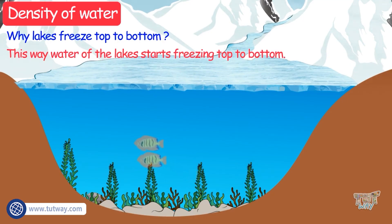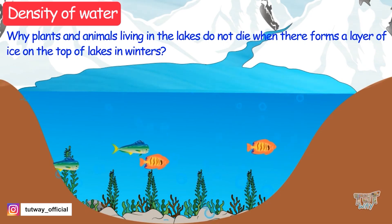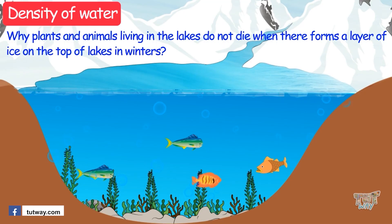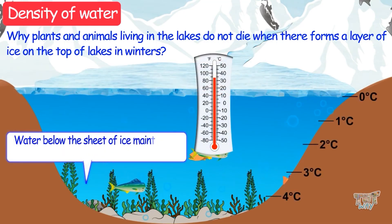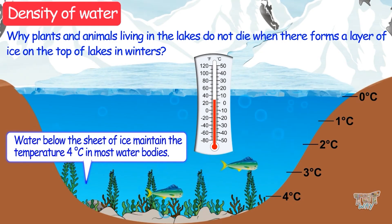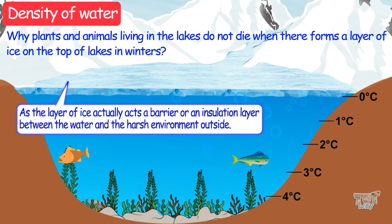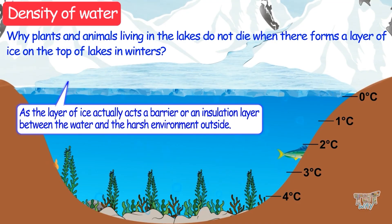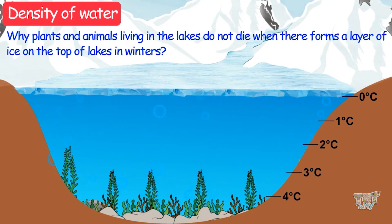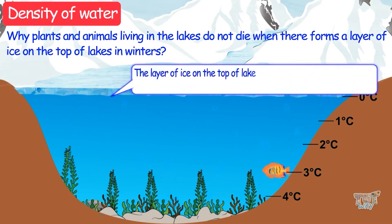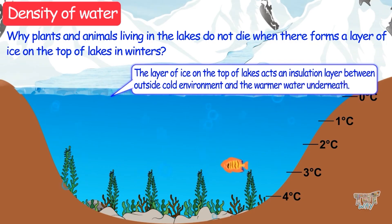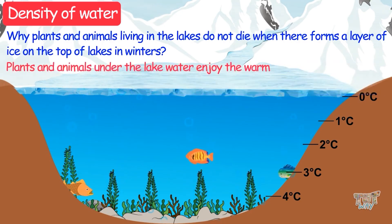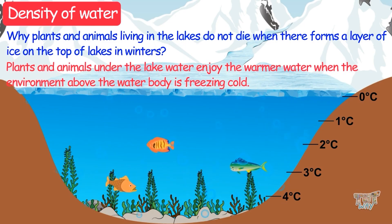Why do plants and animals living in the lake not die when a sheet of ice forms on top of the lakes in winter? The water below the sheet of ice maintains its temperature at 4 degrees Celsius in most water bodies, because the layer of ice actually acts as a barrier or insulation layer between the water and the harsh environment outside. The layer of ice on top of the lakes acts as an insulation layer between the cold outside environment and the warmer water underneath, and the plants and animals under the lake enjoy the warmer water when the environment above is freezing cold.